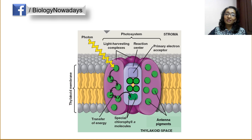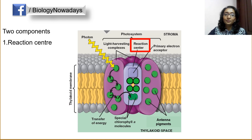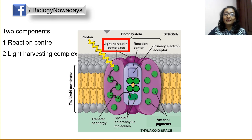Now, let's discuss about the components of photosystems. Each photosystem consists of two closely linked components: the reaction center and the light harvesting complex.